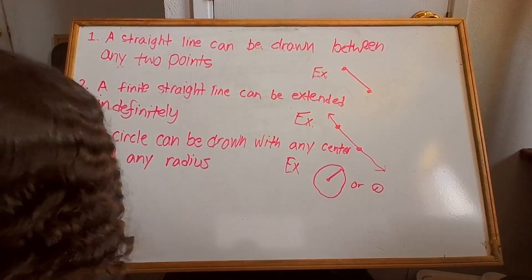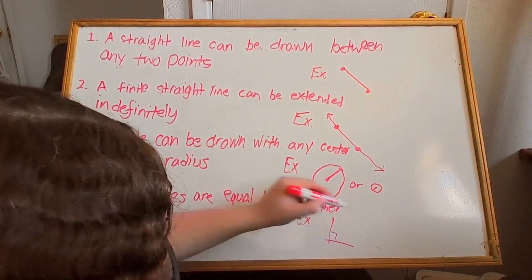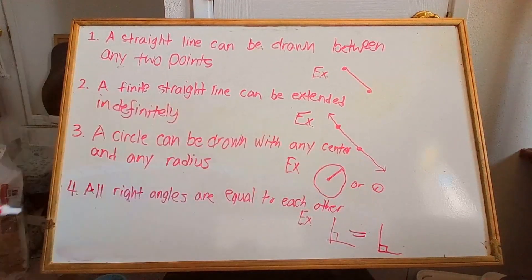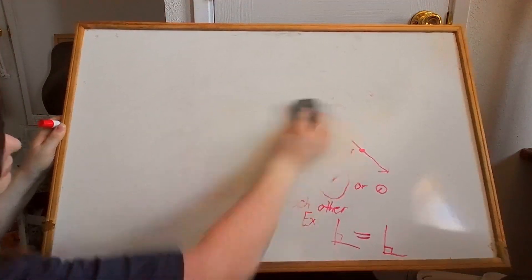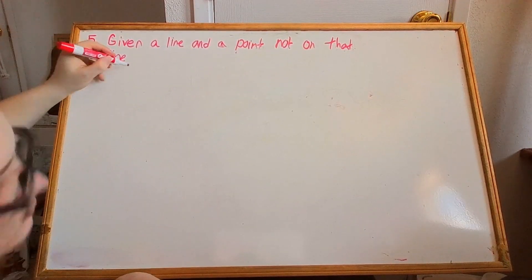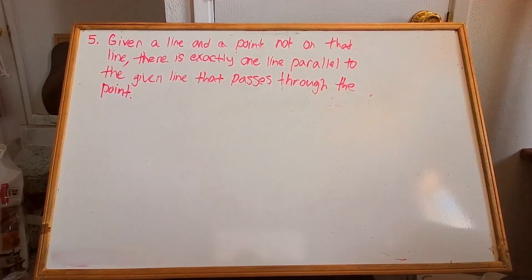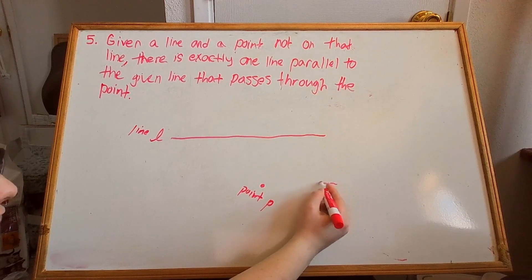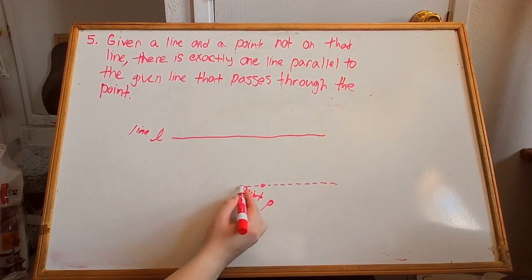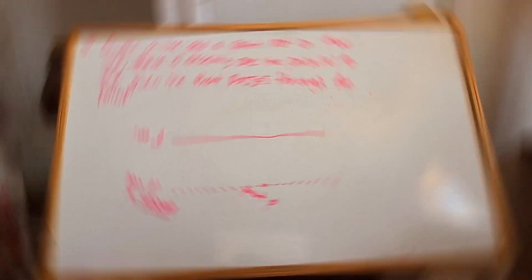The fourth axiom is: all right angles are equal to one another. This axiom says that right angles are consistent across space — a 90-degree angle formed here is the same as one formed anywhere else, giving geometry a kind of angular uniformity. The fifth axiom is a bit wordier: given a line and a point not on that line, there is exactly one line parallel to the given line that passes through the point. This is the famous parallel postulate. It tells us something very specific about how lines behave in relation to each other: in a flat Euclidean world, only one line through a point can run parallel to a given line.